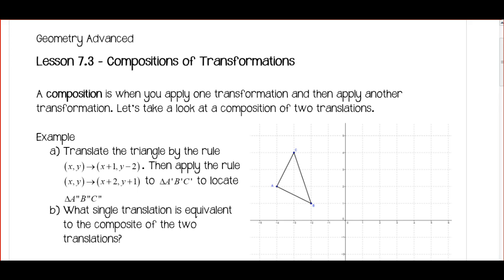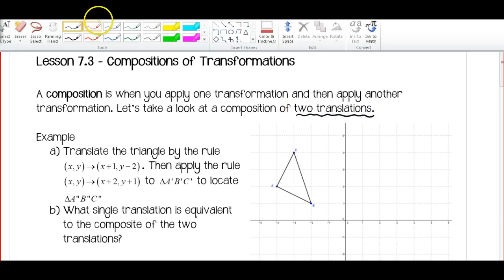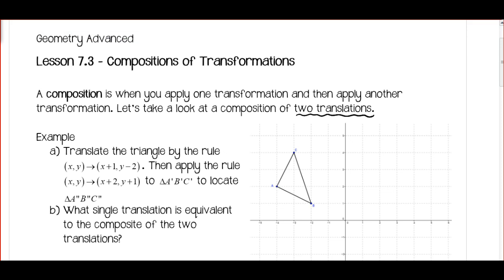We're going to apply one transformation and then right after that we're going to apply another transformation. Let's take a look at this first example of two different translations. For my first translation I'm going to follow this rule: I'm going to take all my points (x, y), take my x values and add 1, and take my y values and subtract 2.